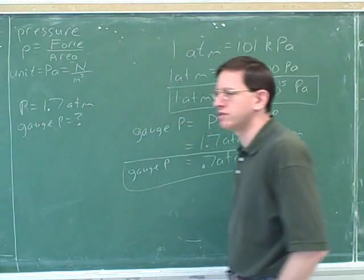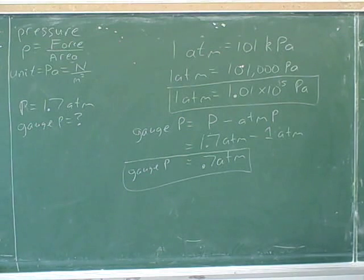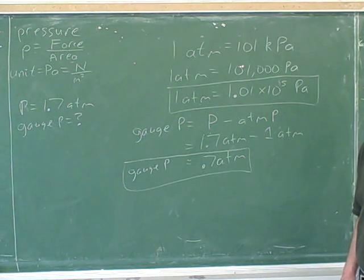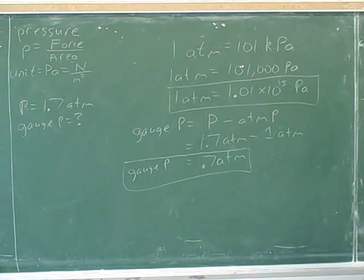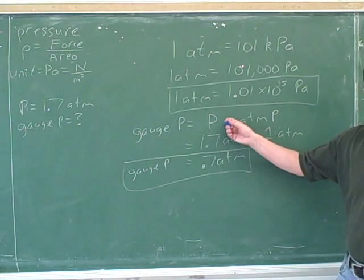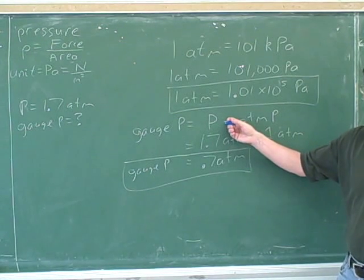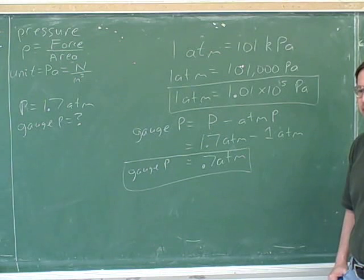Hopefully now we can get a better intuitive understanding for what gauge pressure is — it's just how much extra pressure there is above the normal atmospheric pressure. The gauge pressure tells you how much extra pressure you're feeling above normal atmospheric. Once you understand gauge pressure, you should hardly need to plug into the equation; we just compare it to atmospheric pressure and see how much above it we are.